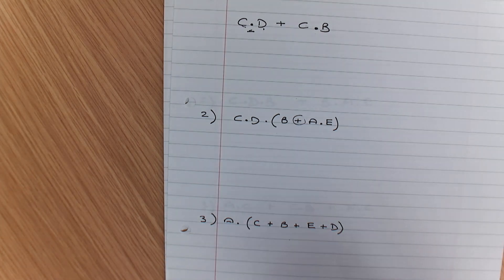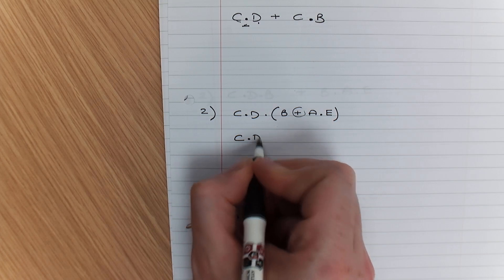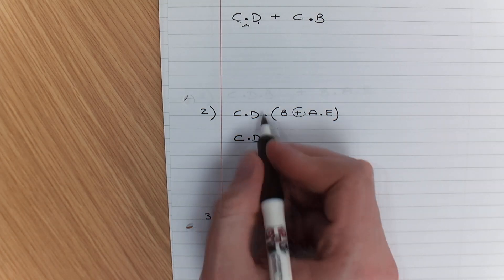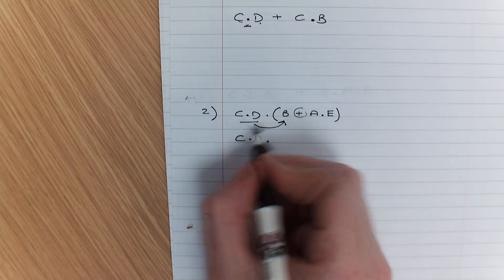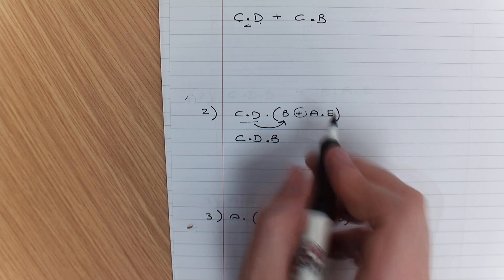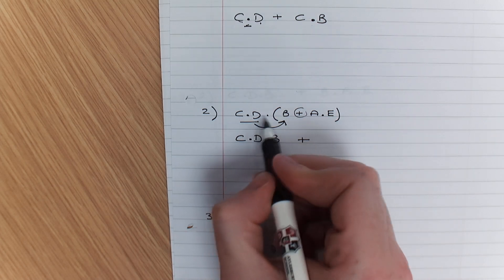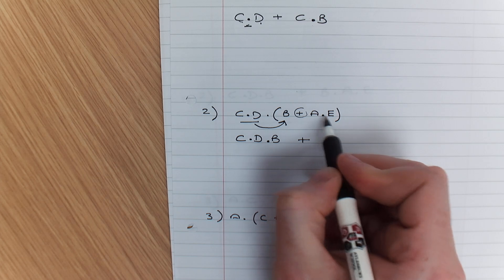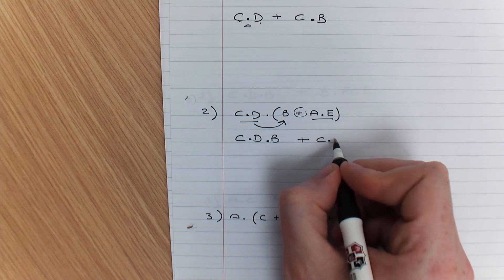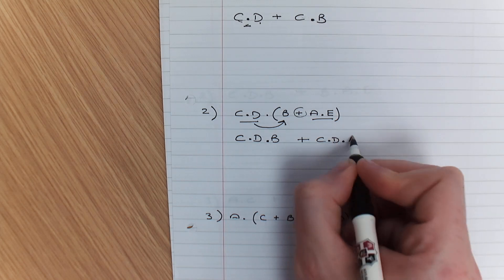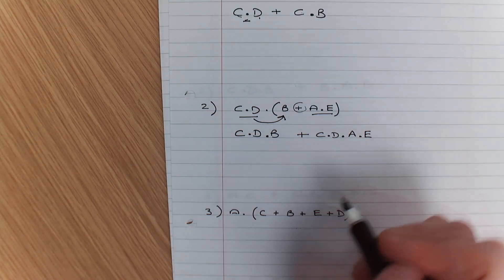So this is how my mindset works. I go C and D and B because they're the same, and B or now I do this, C and D and A and E. So I keep this together, C and D and A and E. So that's how I get to my answer there.